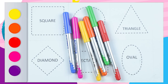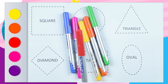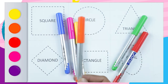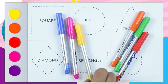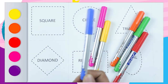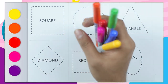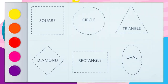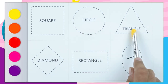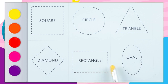Hello friends, how are you? Today we learn shapes with some colors: red color, green color, orange color, yellow color, pink color, blue color. Which shape is this? This is a square, circle, triangle, diamond, rectangle, and oval. So let's draw!